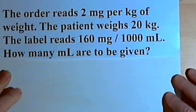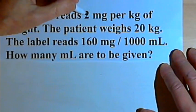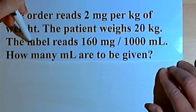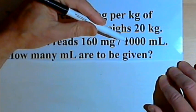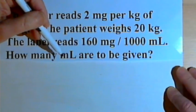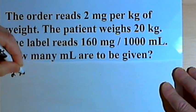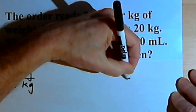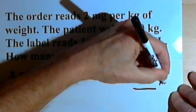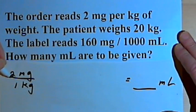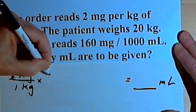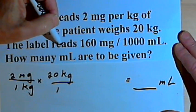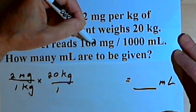Let's make it a little more complicated. Once again the order reads 2 mg per kg of weight, and the patient weighs 20 kg. But now the label reads 160 mg per 1,000 ml. We want to know how many ml are to be given. So let's start with the order: 2 mg over 1 kg. We'll fill in the units we want to end up with — milliliters. We'll multiply the order by the patient's weight: 20 kg over 1. And now we've got the information for what's on hand: 160 mg per 1,000 ml.